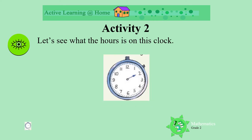Activity 2. Can you tell what the hour is in this clock? Remember, the hour hand is the short hand. Where is the hour hand pointing? The hour hand is pointing at the number 2. This tells us that it must be 2 o'clock.